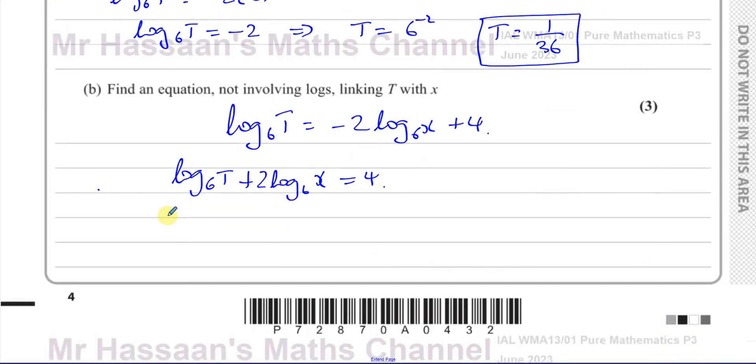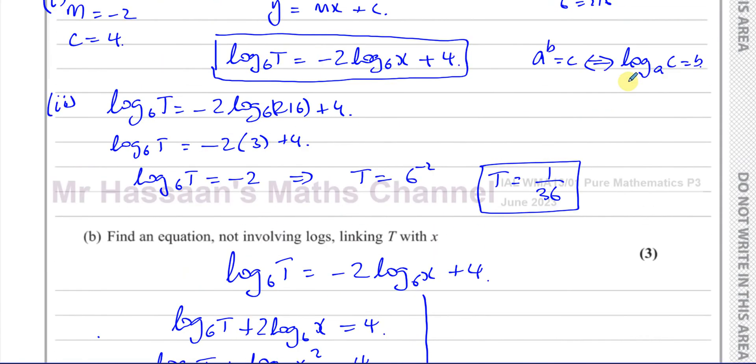Now, I want to combine these two log terms together. I can do that once I use the power law and write this on top. So I have log base 6 of T plus log base 6 of X squared equals 4. Once now I have them in this form, they're to the same base. I can combine these together using the addition. So I can say this is log base 6 of, and we can use the product of these two, which is T times X squared equals 4.